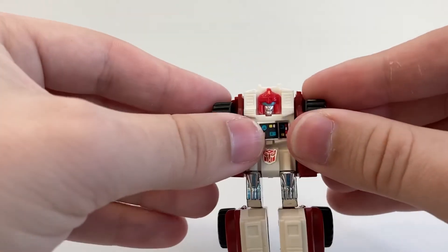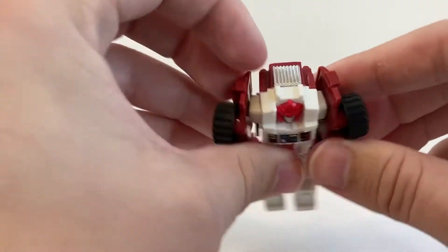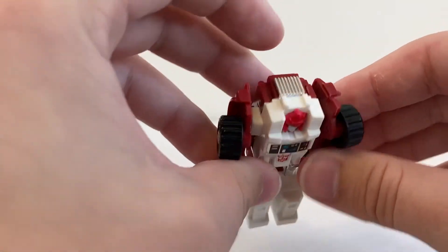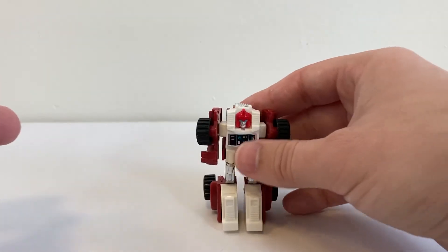Then you take these sections here and just pull them out. They slide out on a bit of an arc—it's a very slight arc, but not just straight out. And there you have Swerve in his robot mode.